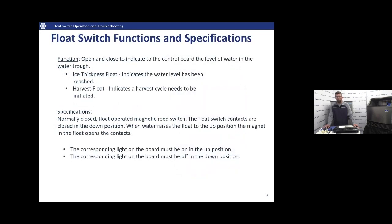The function of our float switches: they open and close to indicate to our circuit board the level of the water in the trough. The ice thickness float indicates that the water level we need to make a batch of ice has been reached. The harvest float indicates a harvest cycle needs to be initiated once that water drops below that float. Specifications: normally closed. The float operates as a magnetic reed switch. The float switch contacts are closed in the down position. When water lifts that float to the up position, the magnet in the float opens the contacts. The corresponding lights on the circuit board should be on when the float is up and should be off when the float is down.